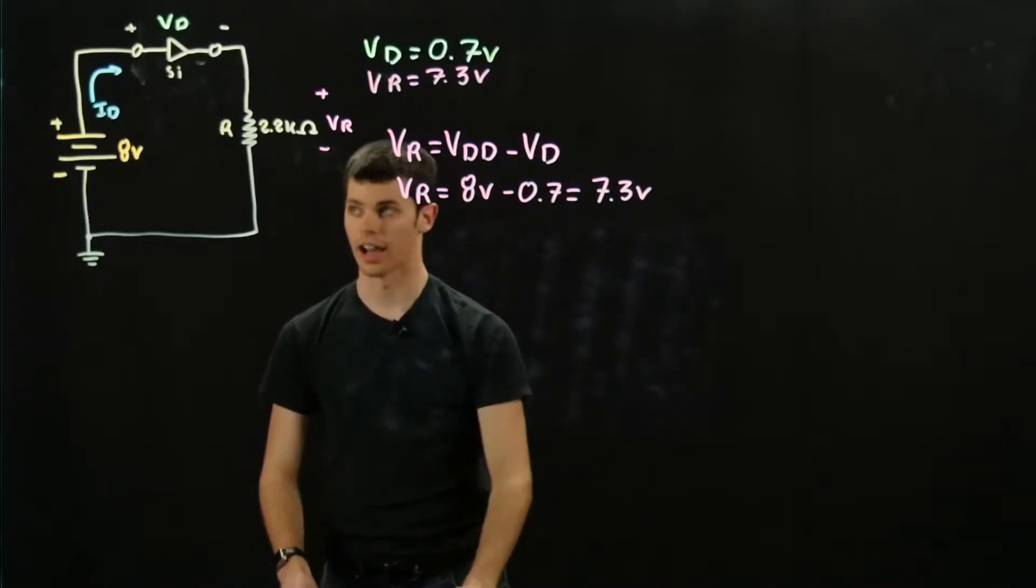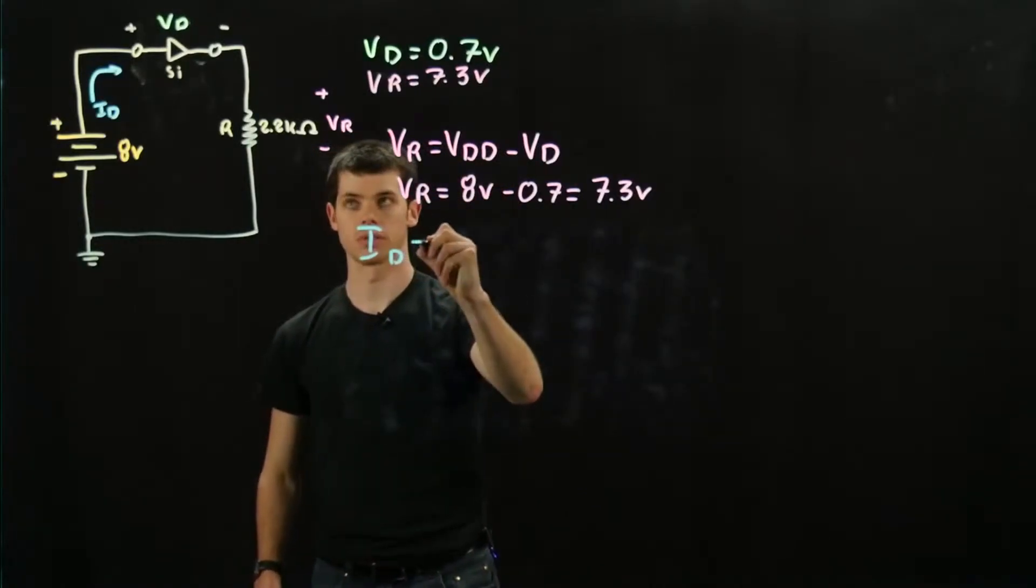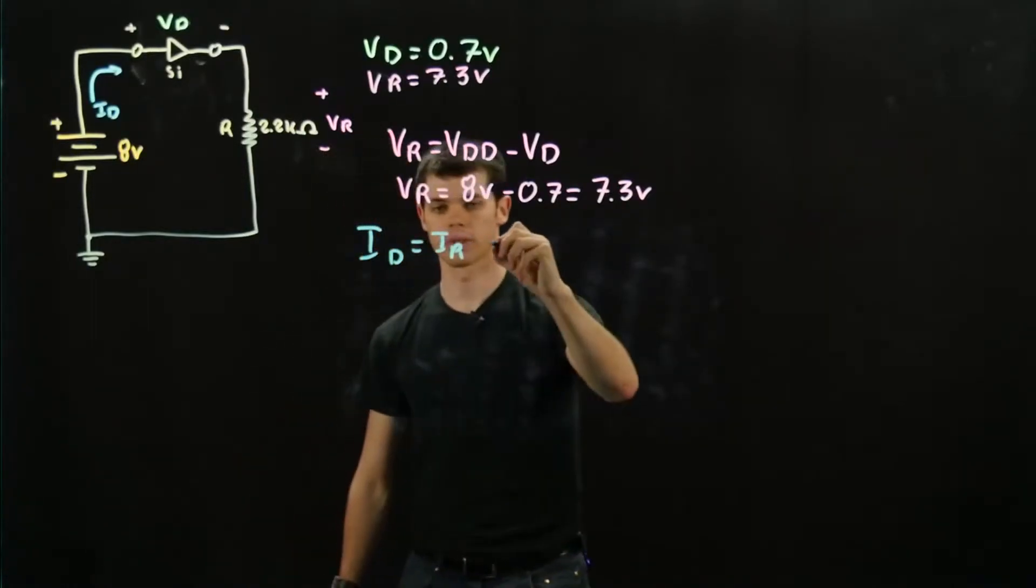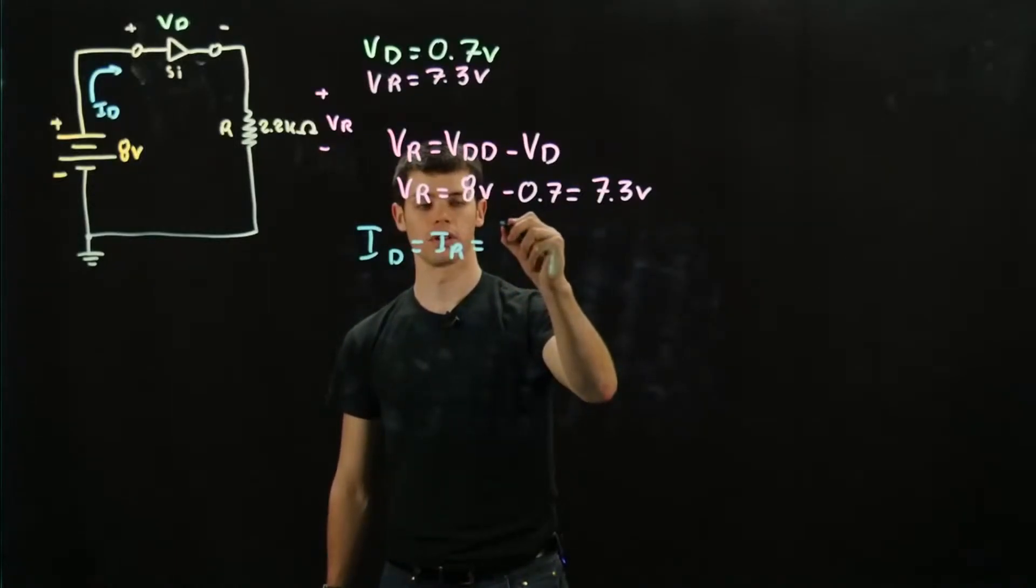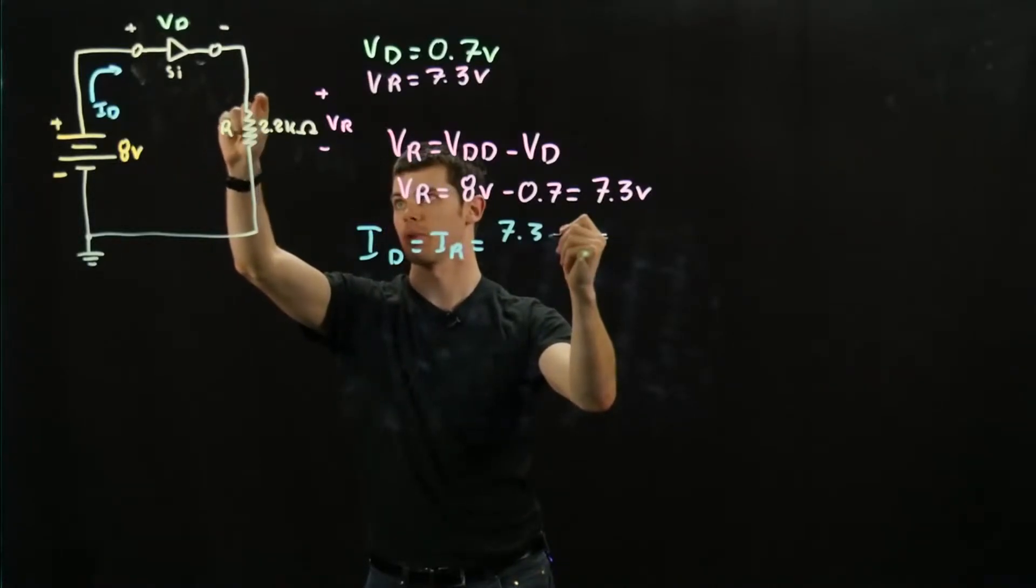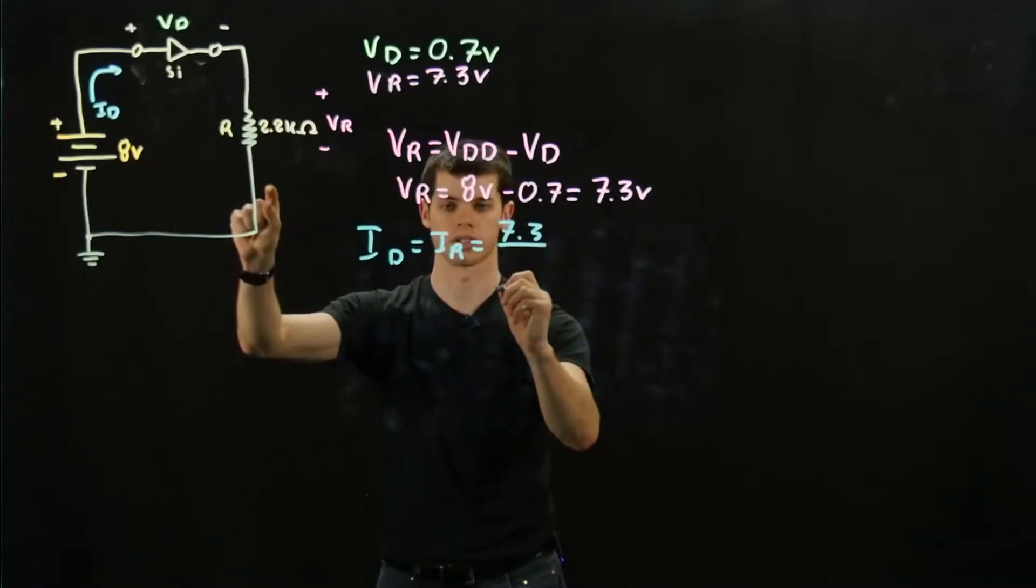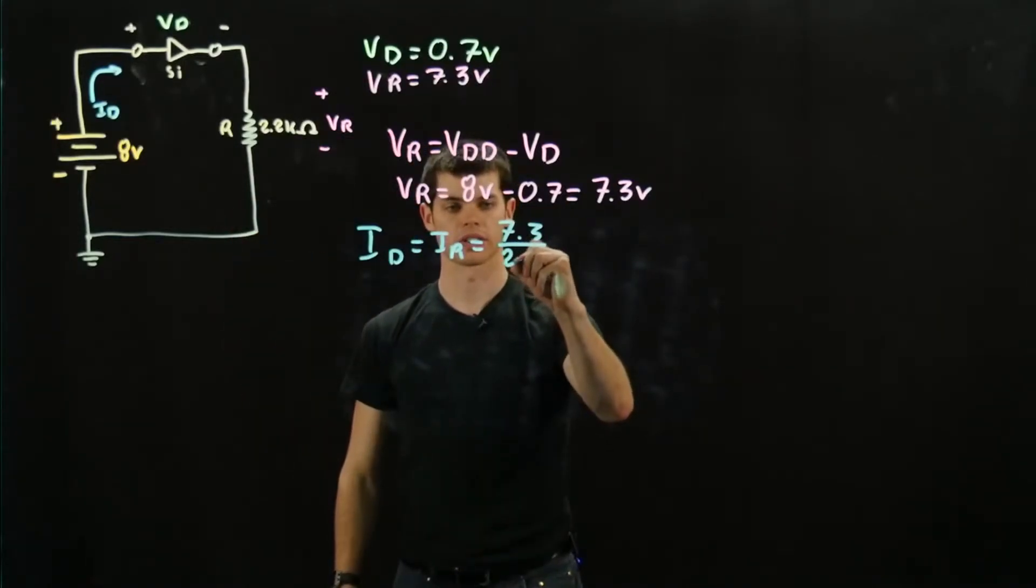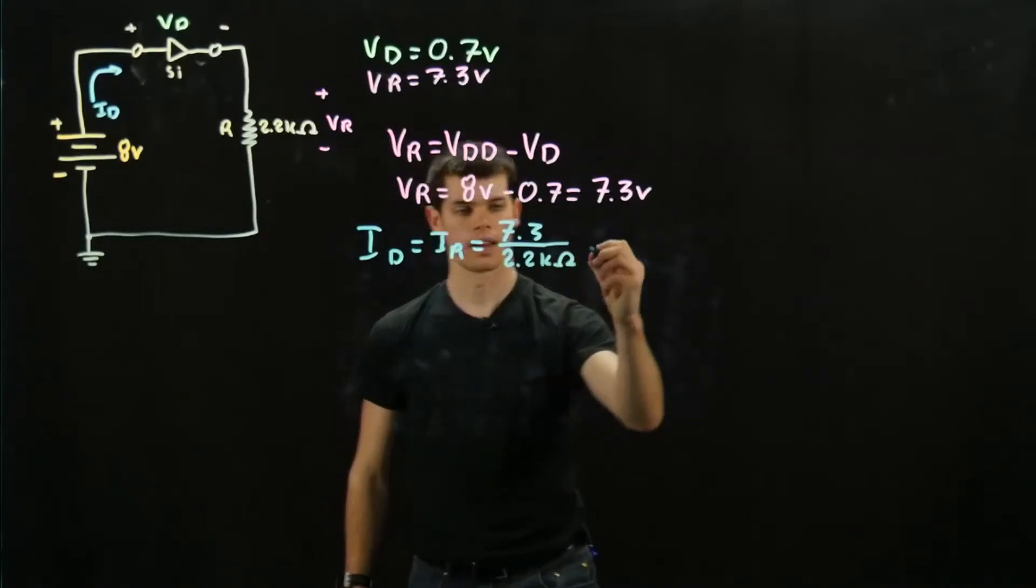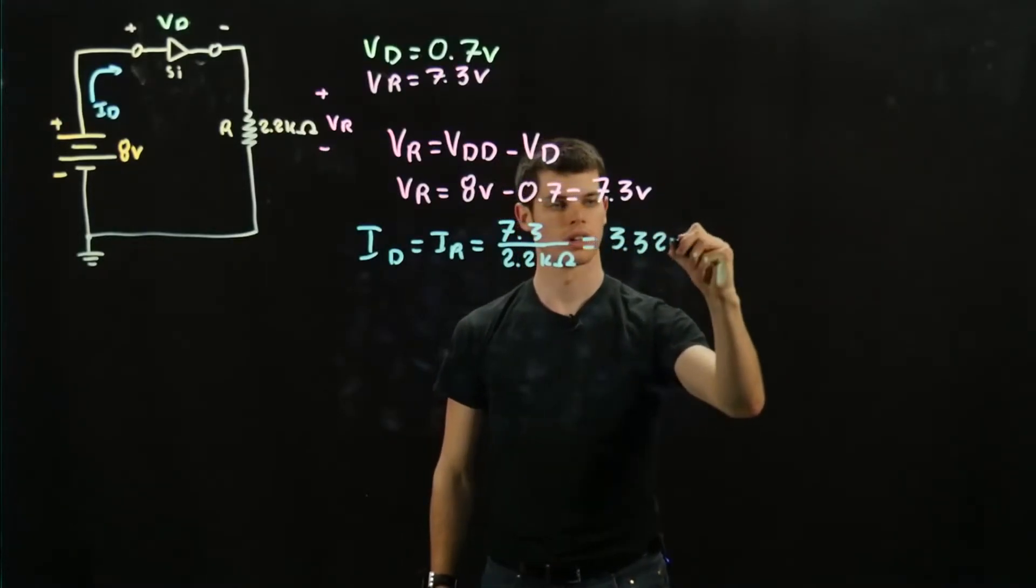All right, now finally we're going to want to find ID. ID is going to be equal to IR, since this is in series. We can just use Ohm's Law for this one. We have the voltage, which is 7.3, because we have the voltage drop across the diode, so we have 7.3 coming in here and 0 down here. We're going to have a voltage drop of 7.3 across the resistor, and we're going to divide this by the resistance, which is 2.2 kilo-ohms. That's going to give us a value of 3.32 milliamps.